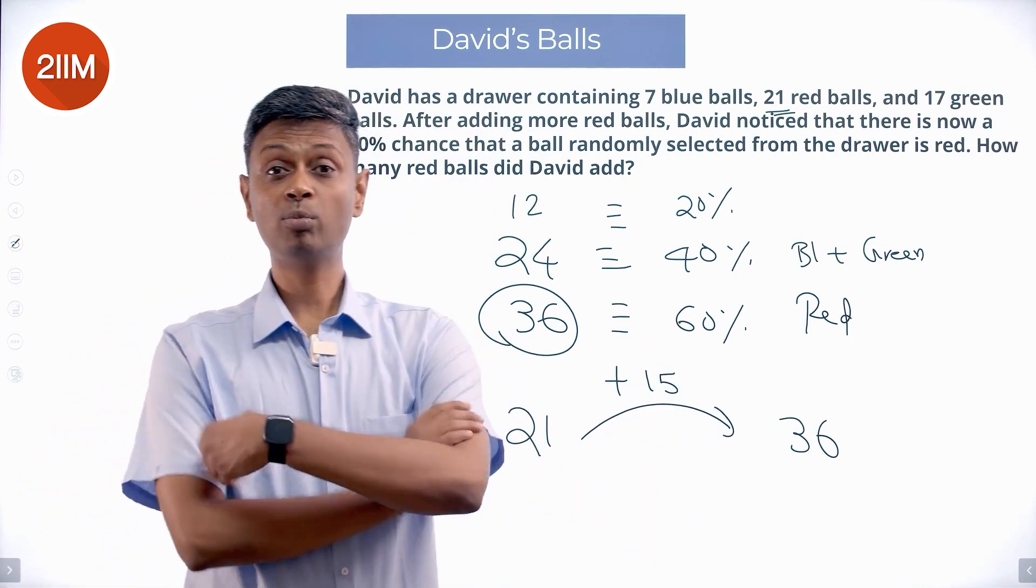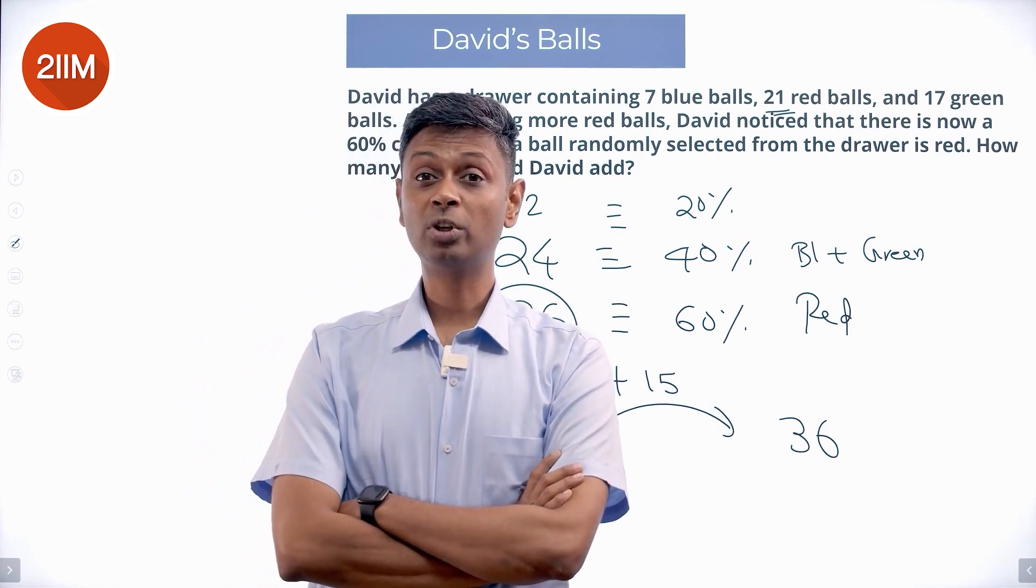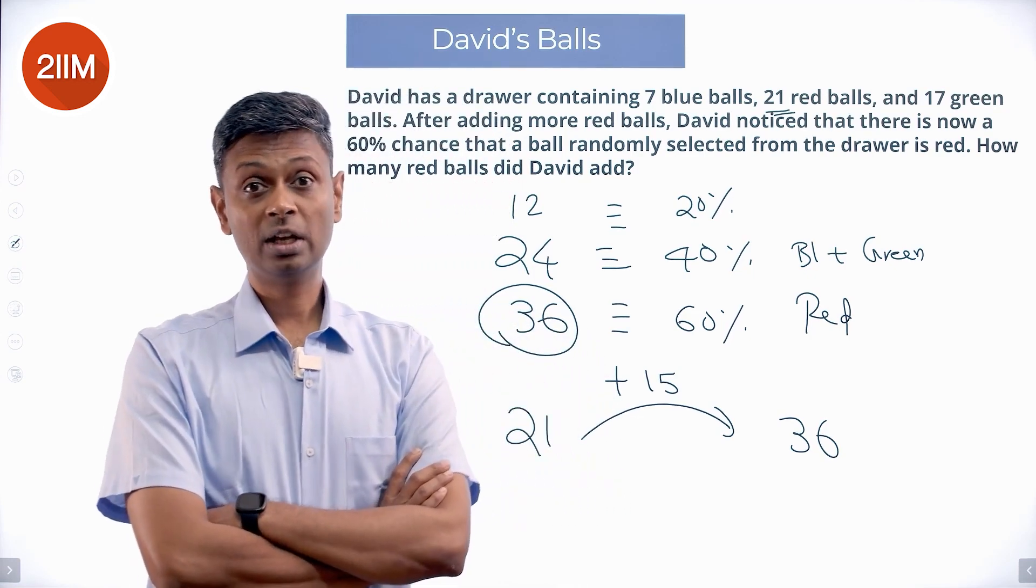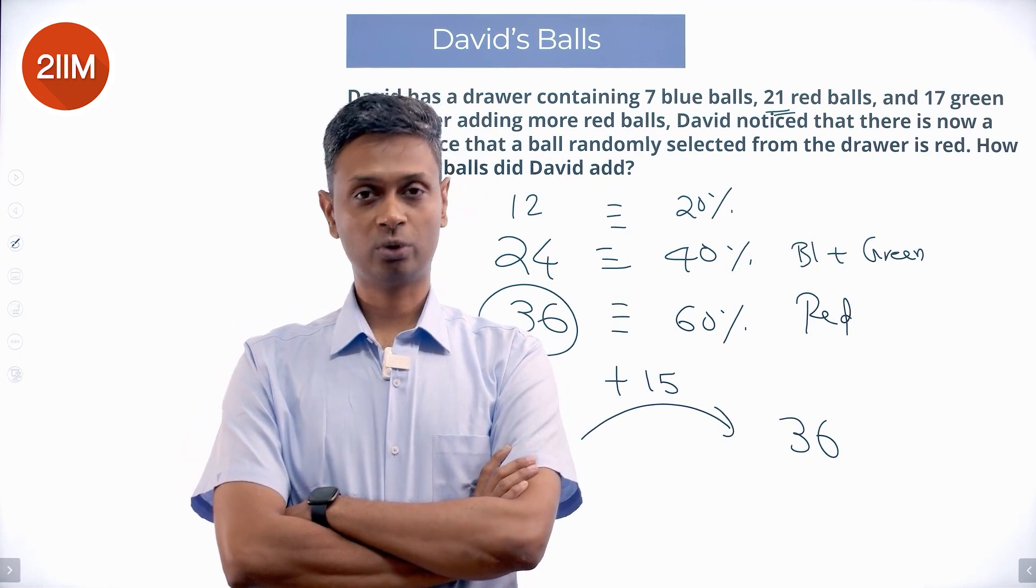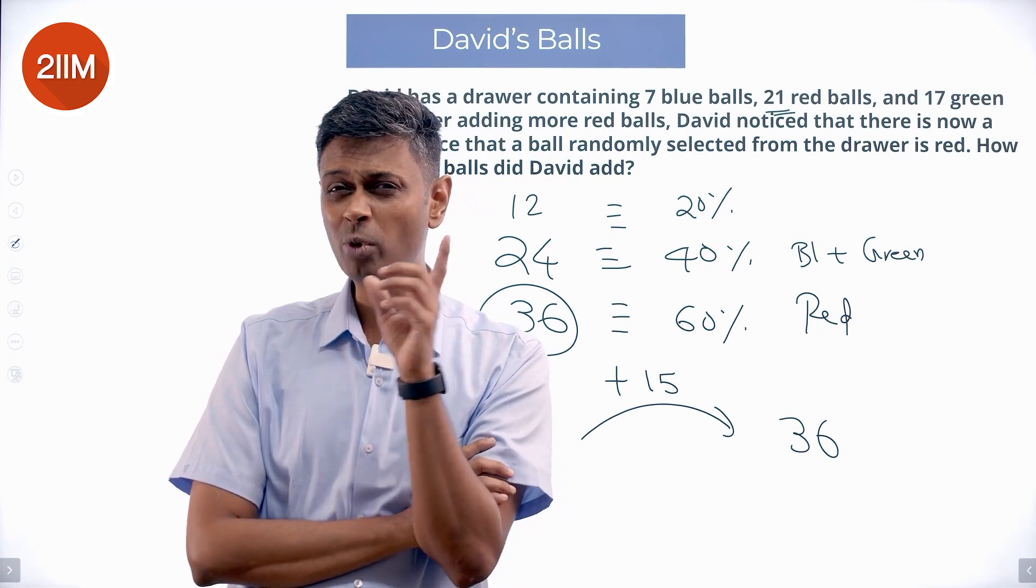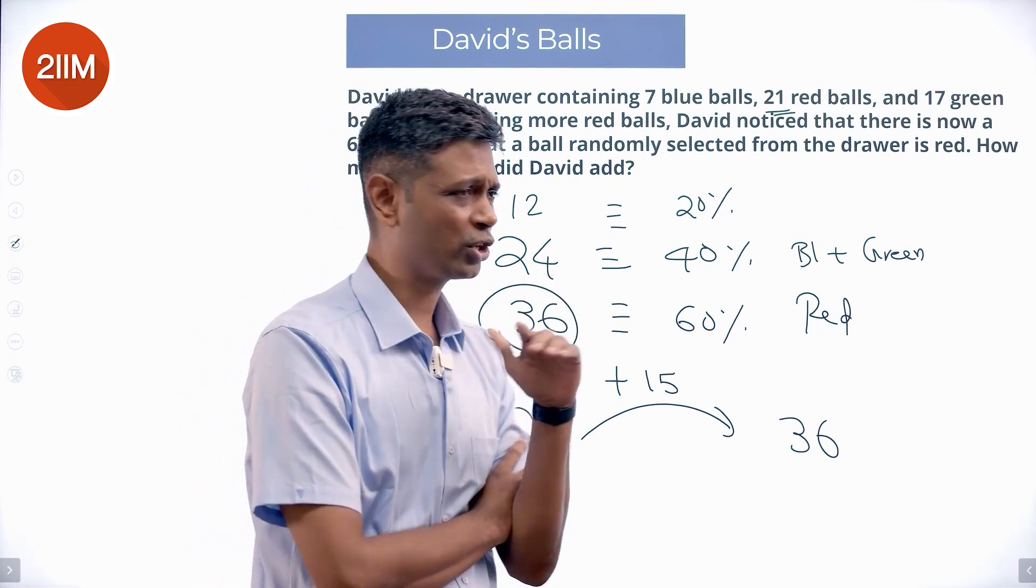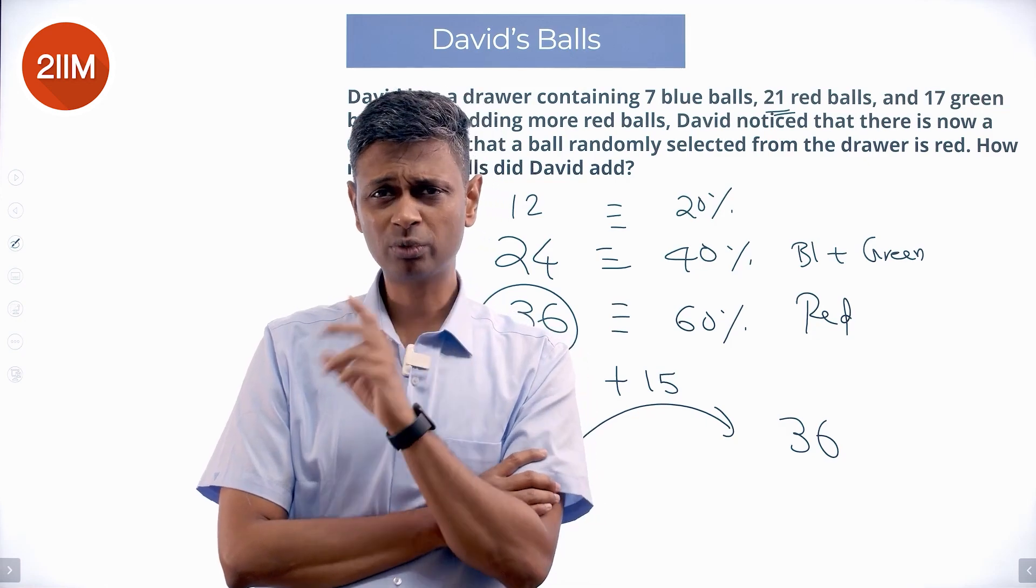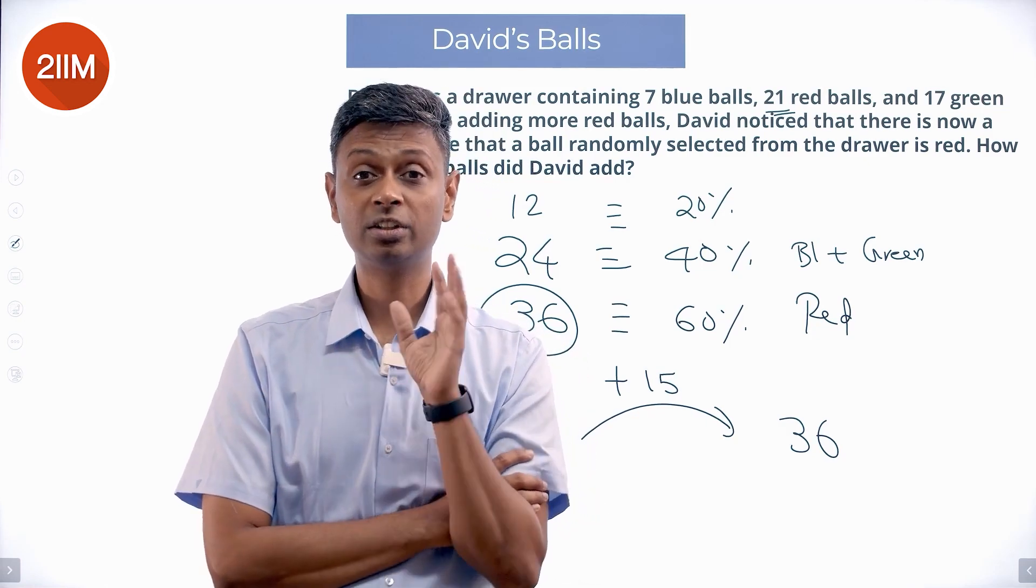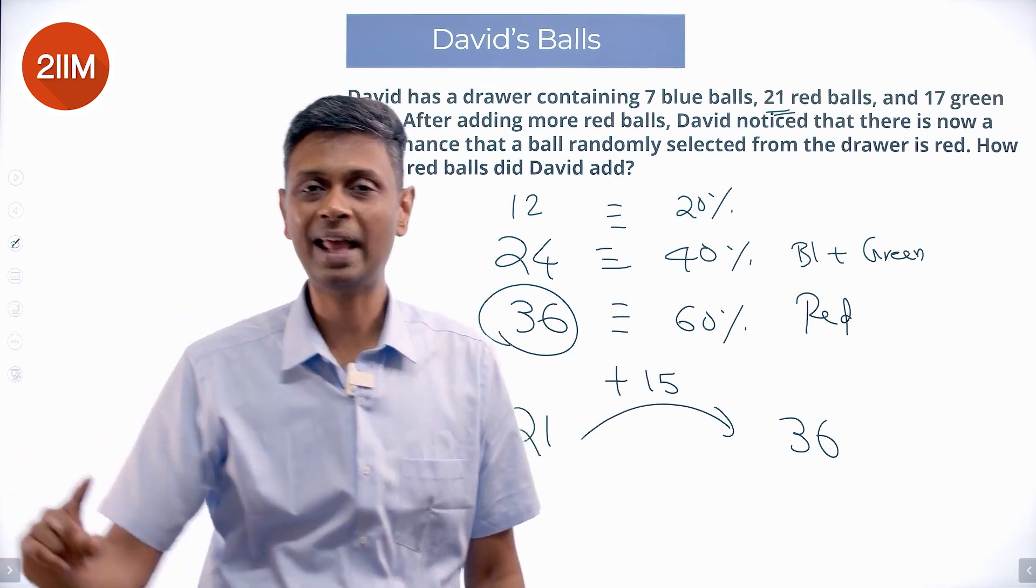To this 21, we add 15 more, you get 36 red balls. If I have 36 red balls, the red balls will constitute 60% of the total. The remaining will constitute 40% of the total. I'm interested in making sure that red balls are 60%. I go about it by saying the remaining has to be 40%. 24 balls remaining, that should be 40%. If 24 balls is 40%, what is 60%? 36 balls. I should have 36 red balls. I already have 21. I'll add 15 more.